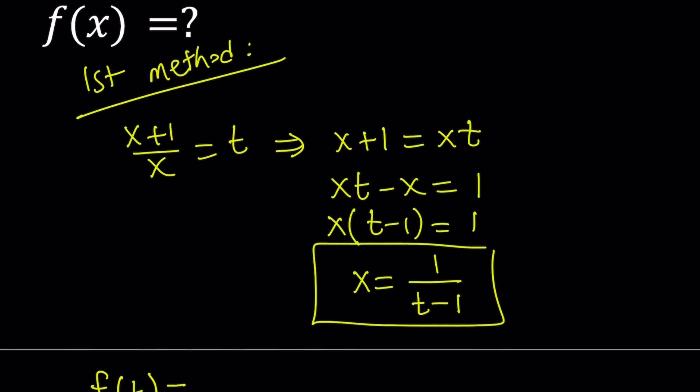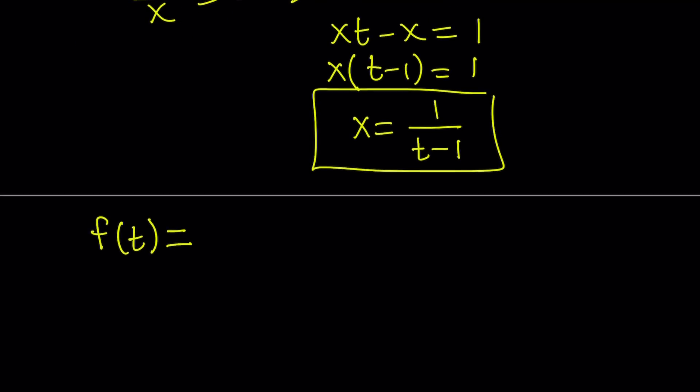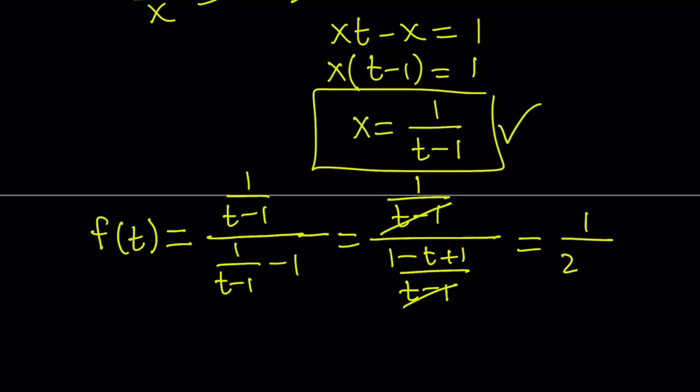F of t from here is going to be: we have x over x minus 1, so that is going to be 1 over t minus 1 divided by 1 over t minus 1 minus 1. I replaced x with this. Now we're going to go ahead and simplify this. I can make a common denominator at the bottom. It's going to give me 1 minus t plus 1 divided by t minus 1. Now when you flip and multiply, these two are going to cancel out and we end up with 1 over 2 minus t.